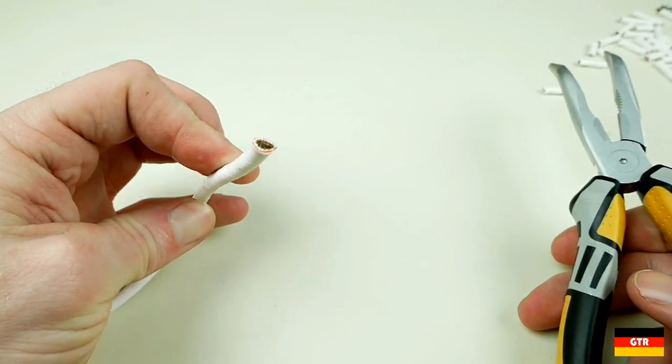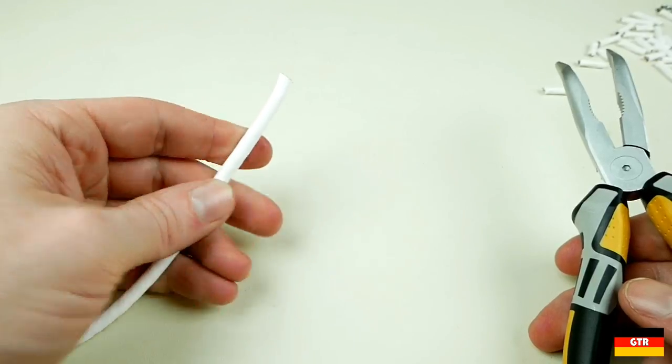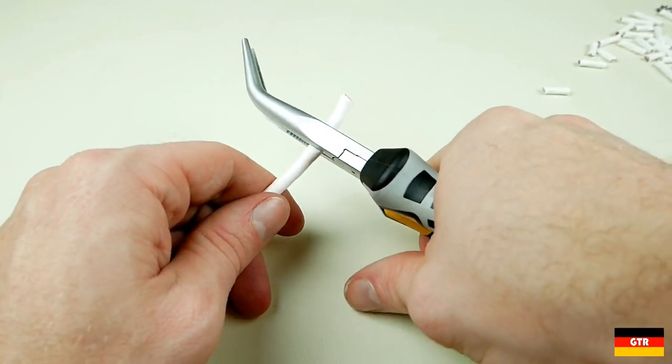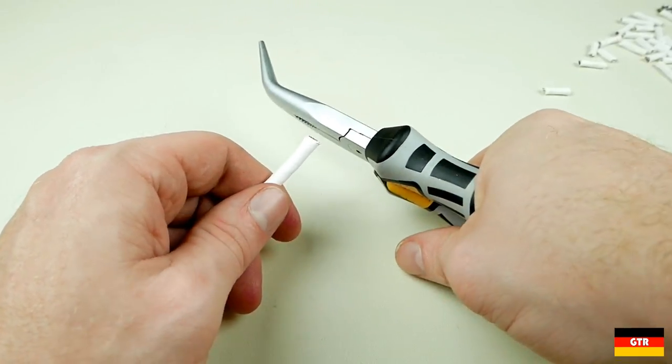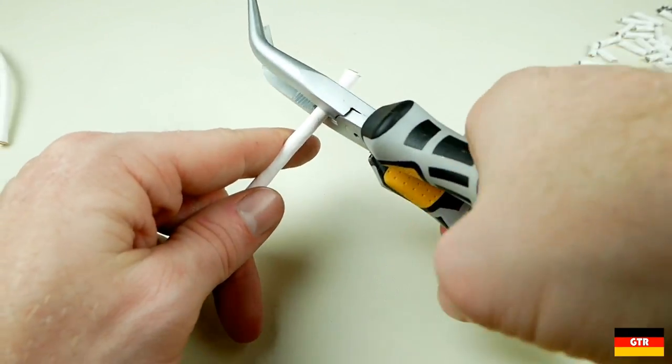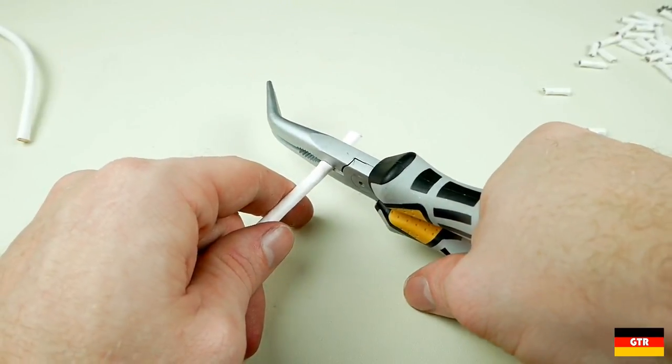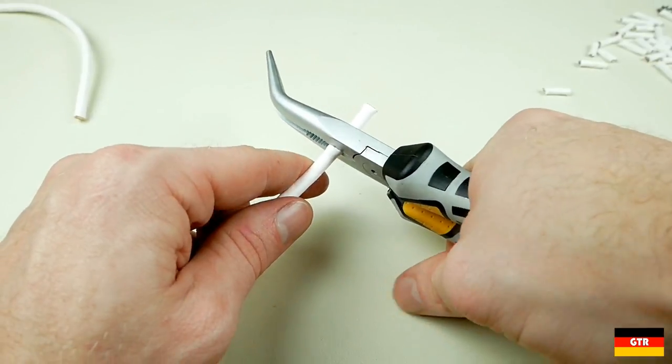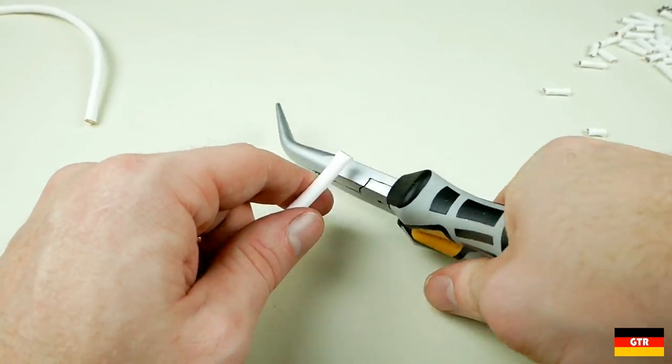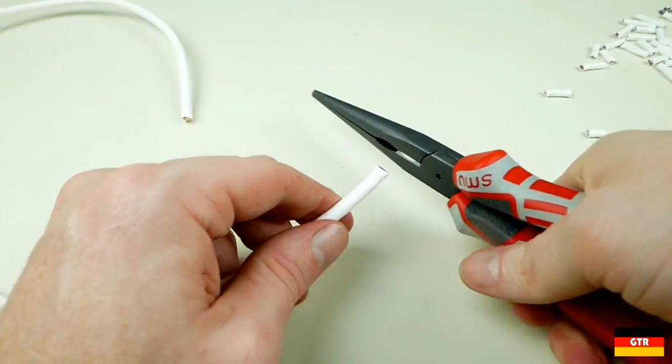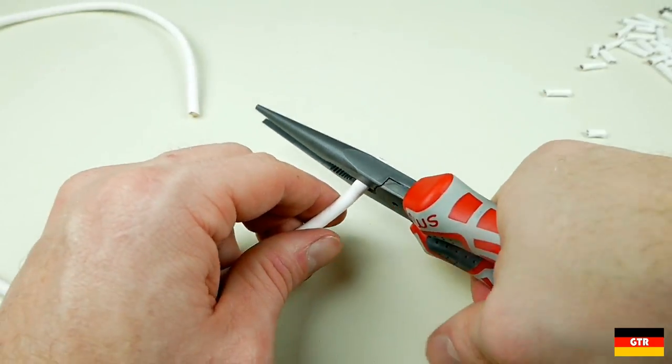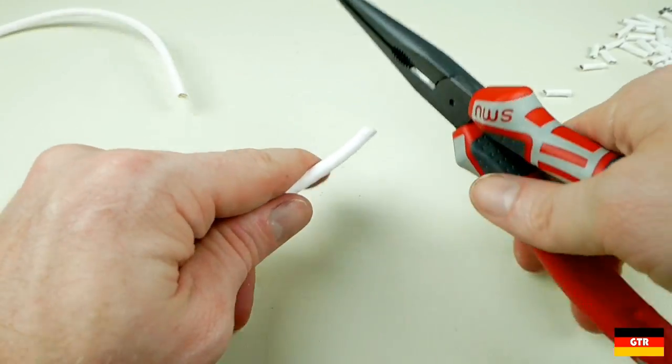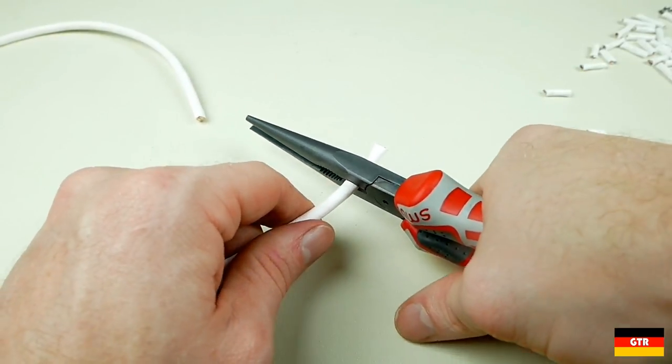Now to step it up, we'll try the same pliers on some 8 American wire gauge stranded wire with a Teflon jacket. Definitely a lot more difficult to get through it using the chrome plated pliers. Using the pliers with the black finish, I can already tell it's cutting much easier on this heavy gauge wire.